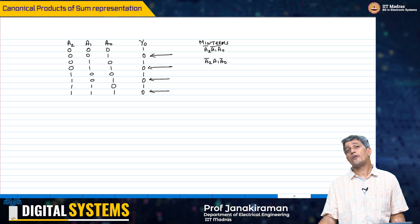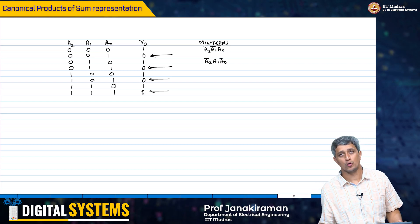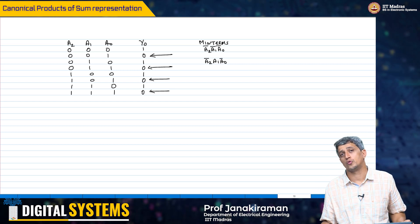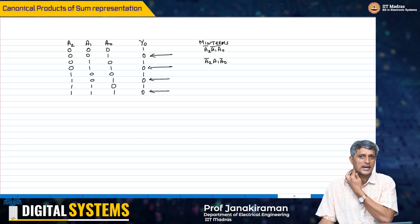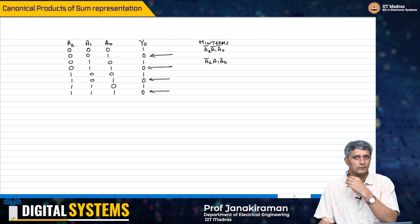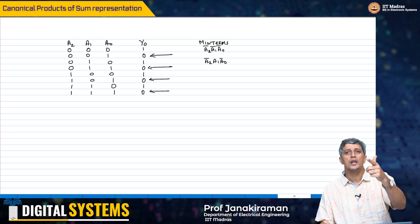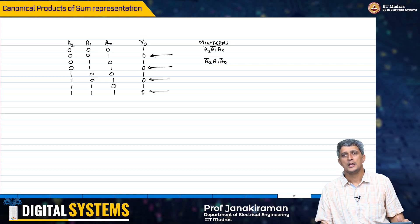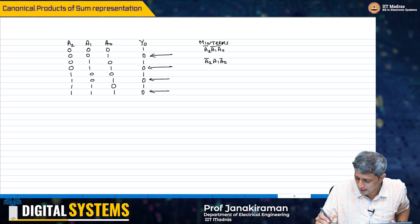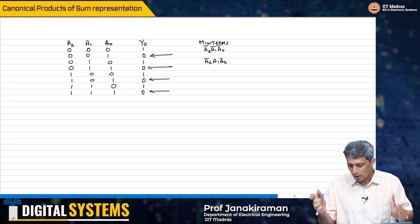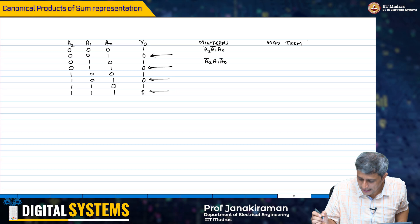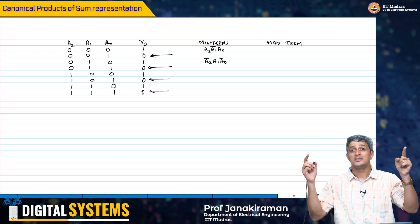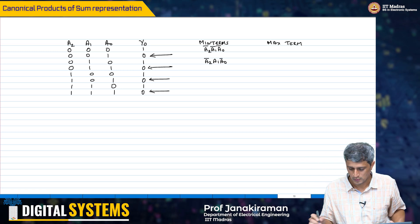What does that mean? The final sum could be 1 if any one of these minterms happens to be 1. And that is exactly what we want — if any of these combinations appear at the inputs, we want the output to be 1, for y-naught to be 1. That is exactly the definition of the truth table. Now, if I want to do the same thing with zeros — the 0 is the dual of the 1. So, in the minterms we considered the product; in the maxterm, I will have to consider the sum, not the product.